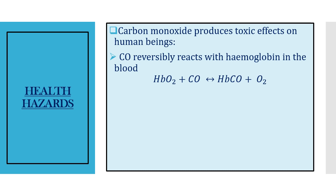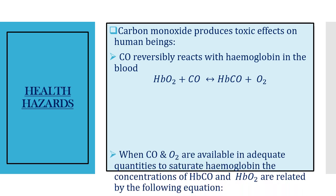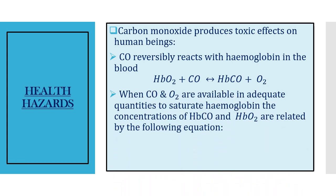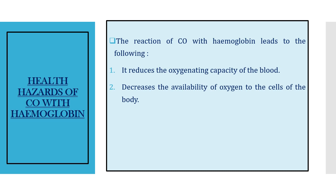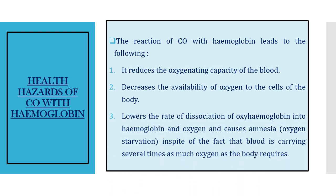When the cells are deprived of oxygen, what happens is: when CO and CO₂ are available in adequate quantities to saturate hemoglobin, the concentration of carboxyhemoglobin and oxyhemoglobin are related by a specific equation. It is clear that carboxyhemoglobin dominates oxyhemoglobin, and as a result the cells, instead of getting oxygen, receive carbon monoxide. The reaction of CO with hemoglobin reduces the oxygenating capacity of the blood and decreases the availability of oxygen to the cells of the body. It also lowers the rate of dissociation of oxyhemoglobin into hemoglobin and oxygen.